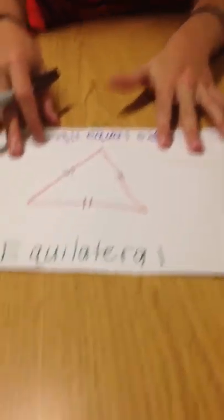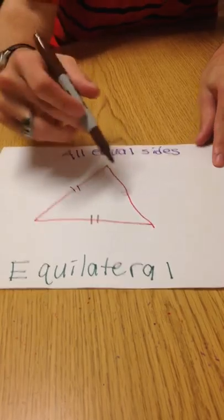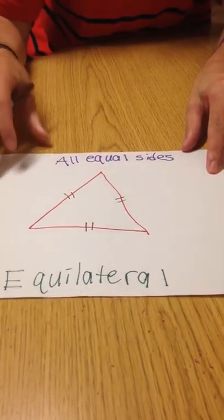The last triangle, and the easiest to identify, is the equilateral triangle, because all three sides are equal.